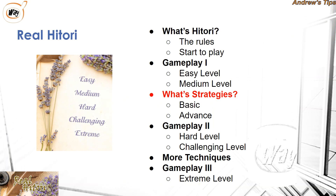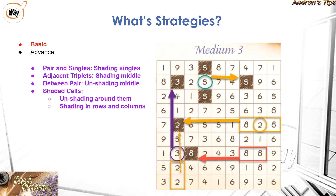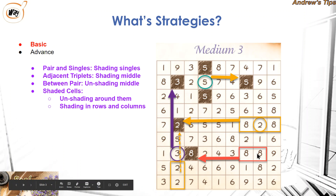Let me show you one game. In this game, firstly, you look at the double eight and the single one. You have to black the single one, because if that one is a circle, it breaks the rules.